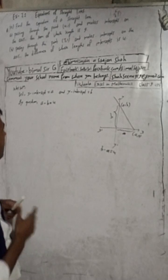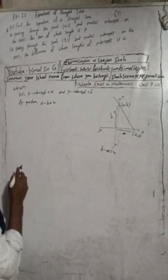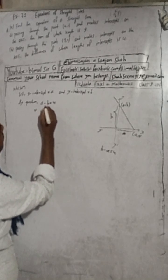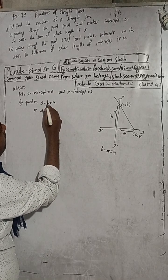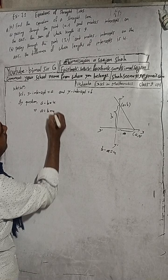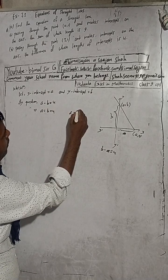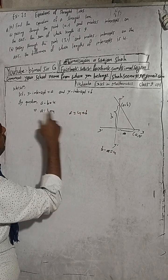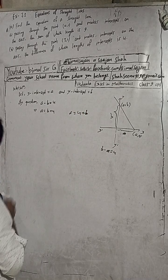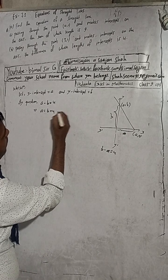Now, with x-intercept a and y-intercept b, by the question a minus b is equal to 4. When you solve this, minus b goes to the other side, so a is equal to b plus 4. This is our equation 1.